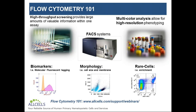Previously, we gave a webinar outlining the fundamentals of flow cytometry called Flow Cytometry 101, and I would invite those new to the field to have a look — the webpage is listed on this slide. In summary, the three main data readouts from flow cytometry are fluorescence histograms, scatter plots, and bivariate dot plots, which give information about protein expression, cell morphology, and co-expression patterns, respectively.